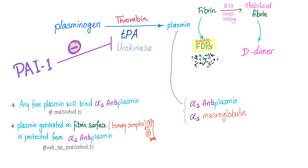Plasminogen into plasmin thanks to TPA. TPA is inhibited by plasminogen activator inhibitor. Then fibrin is degraded into fibrin degradation products, and stabilized fibrin into D-dimer. The free plasmin is inhibited by alpha-2 antiplasmin. However, the plasmin generated on the fibrin surface — hashtag plasmin incorporated — forms a ternary complex, meaning three components, and is protected from alpha-2 antiplasmin. This is amazing because that's how fibrin lysis can actually occur. Otherwise fibrin lysis would never happen if alpha-2 antiplasmin had its way.